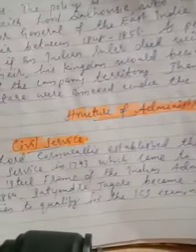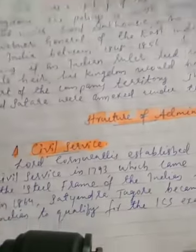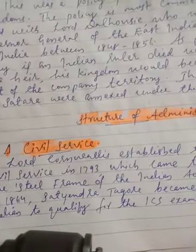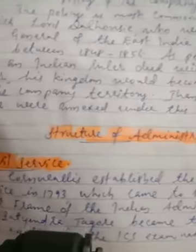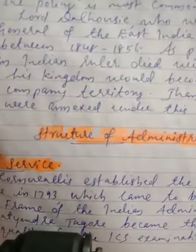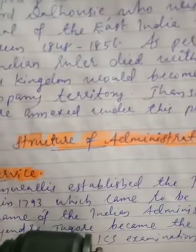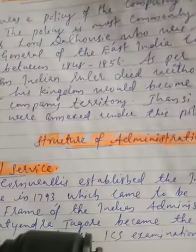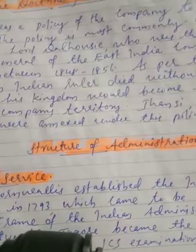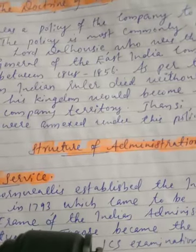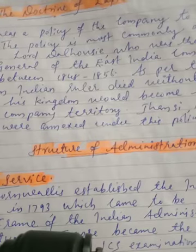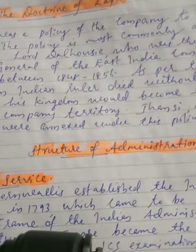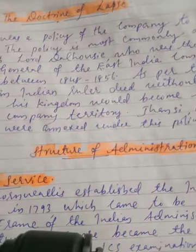In 1864, Satyendra Tagore became the first Indian to qualify for the ICS examination. He was the elder brother of the poet Rabindranath Tagore. Earlier, directors of companies used to appoint young recruits, but after 1853, recruitment was done through a written examination. The East India College was set up in England to educate civil servants about Indian customs, languages, and norms of governance.